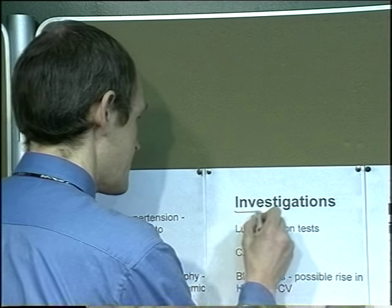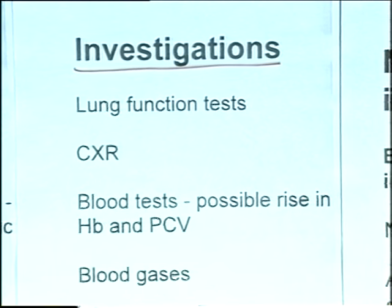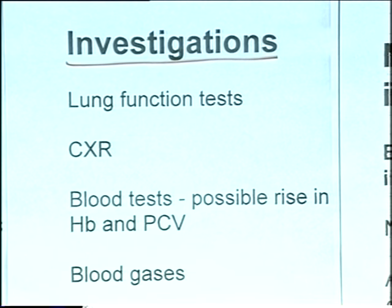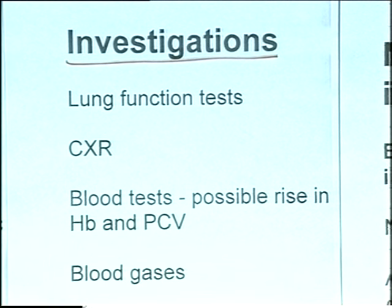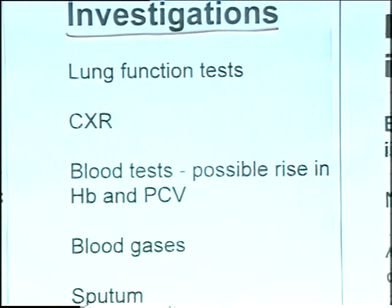The clinical picture in chronic bronchitis and emphysema is usually fairly obvious. Specific investigations include various lung function tests - peak flows and spirometry. Chest X-ray will show the over-inflated, flattened diaphragm picture. Blood tests may show rises in haemoglobin and packed cell volume.